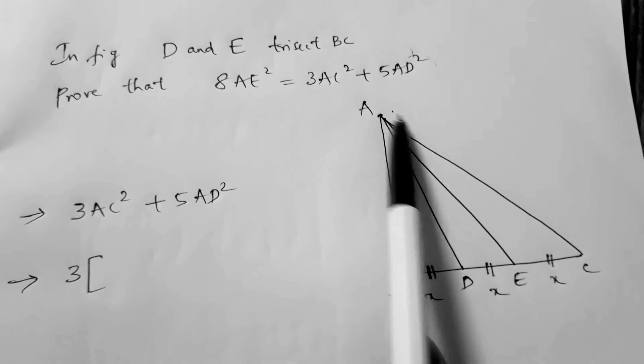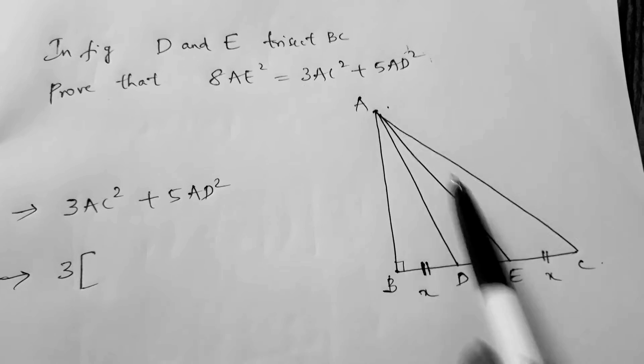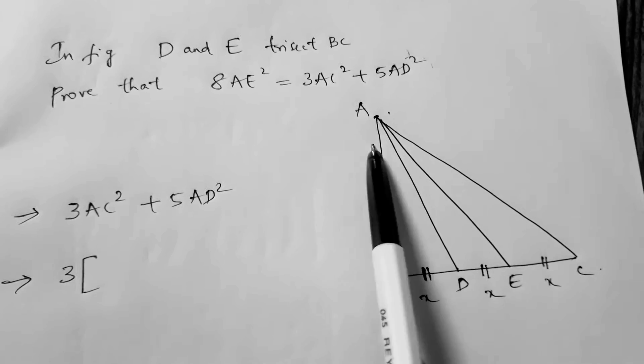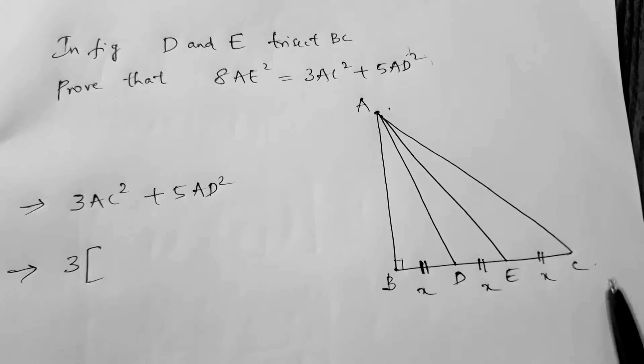Now, what is AC²? Here it is 90 degrees, so apply Pythagorean theorem. AC² is AB² plus BC².